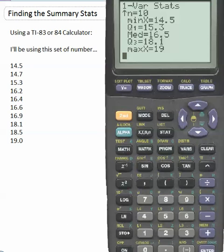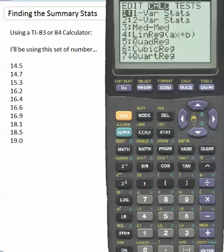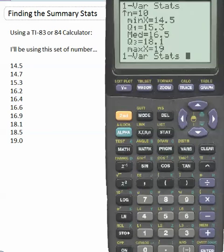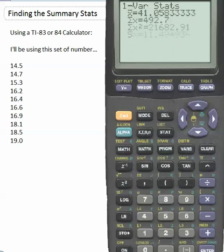Alright, pretty easy, isn't it? So now if I wanted to find the sample statistics for that other list that I had in there, I could just hit stat again. Go back to calculate. Hit number one or just hit enter because I'm already on it. And then just choose the different list. So this time I'm going to hit second and then the number two.